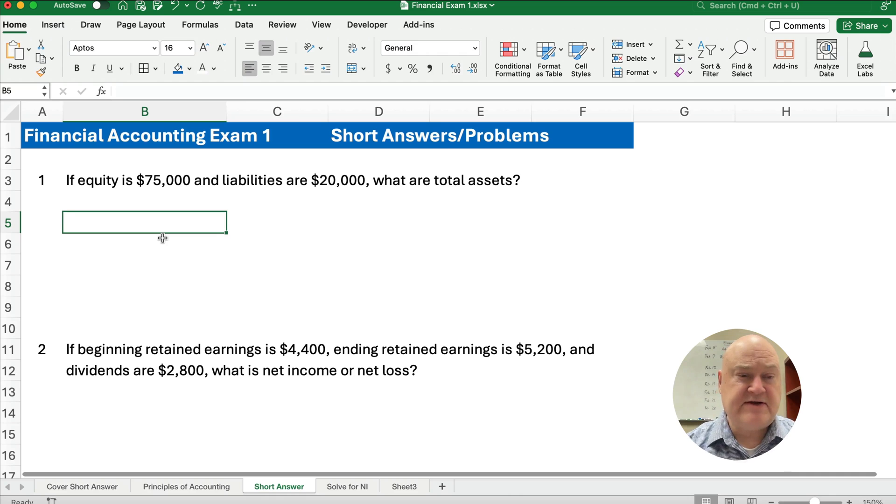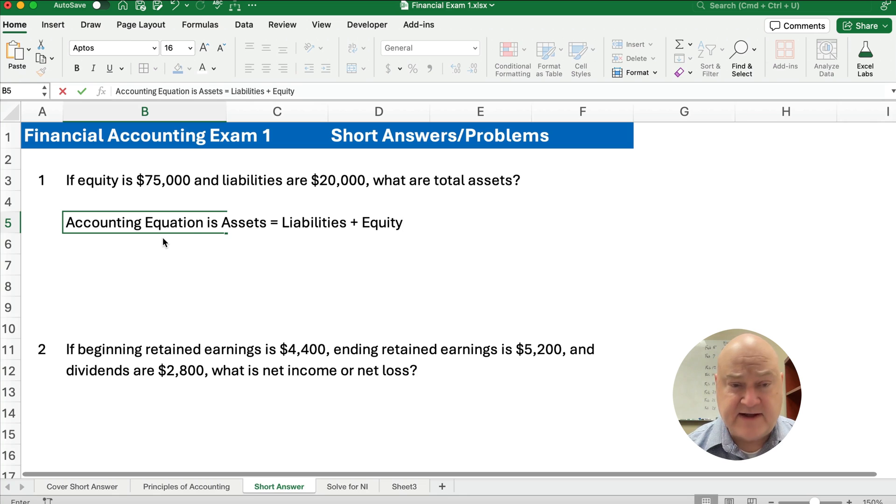So the first question is, if equity is $75,000 and liabilities are $20,000, what are total assets? Well, this is testing the accounting equation. And you remember the accounting equation is assets have to equal liabilities plus equity.